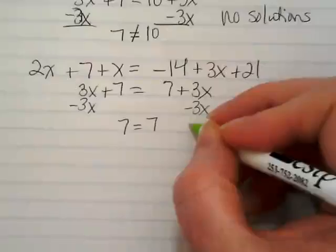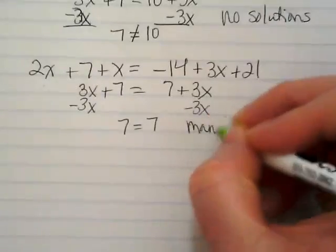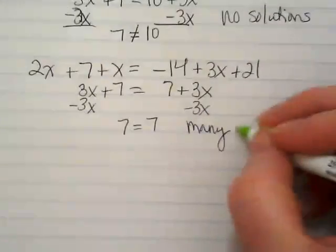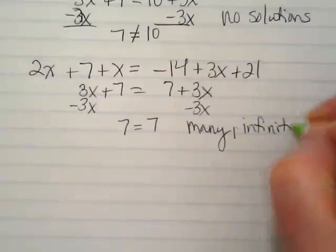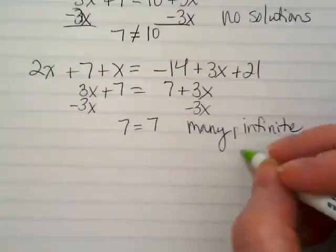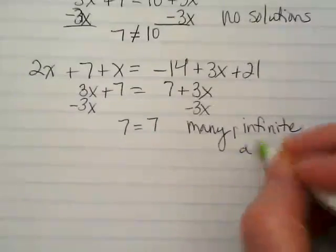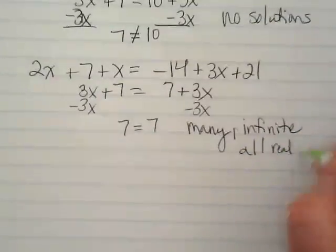there's another way of putting this answer. The foldable we're using today calls it many. Khan Academy called it infinite. If you're checking in your book, they say all real numbers.